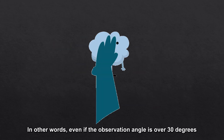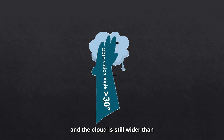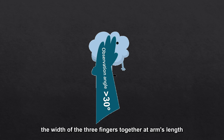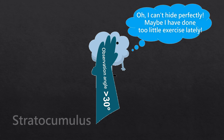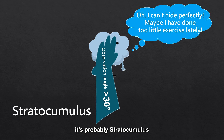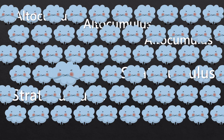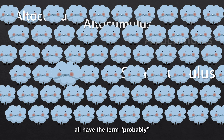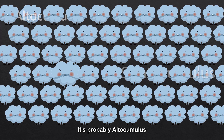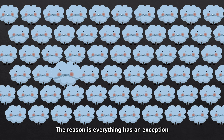In other words, even if the observation angle is over 30 degrees, and the cloud is still wider than the width of the three fingers together at arm's length, it's probably Stratocumulus. Smart viewers may have noticed that the answers under these two rules all have the term 'probably.' It's probably Altocumulus. It's probably Stratocumulus. The reason is, everything has an exception. However, these two rules apply in most situations.